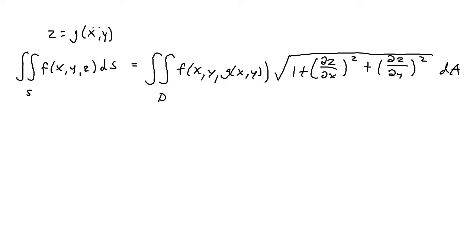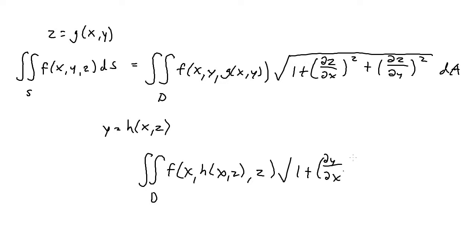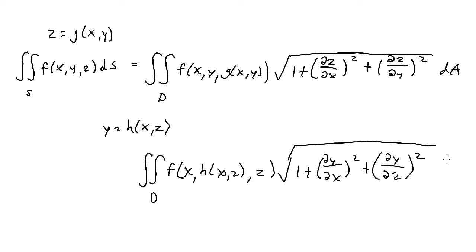This formula can also work if instead of z equals g(x,y), you have y equals some function h in terms of x and z. You can switch up the formula: the double integral over region D of f(x, h(x,z), z) times the square root of 1 plus the partial derivative of y with respect to x squared plus the partial derivative of y with respect to z squared, times dA.